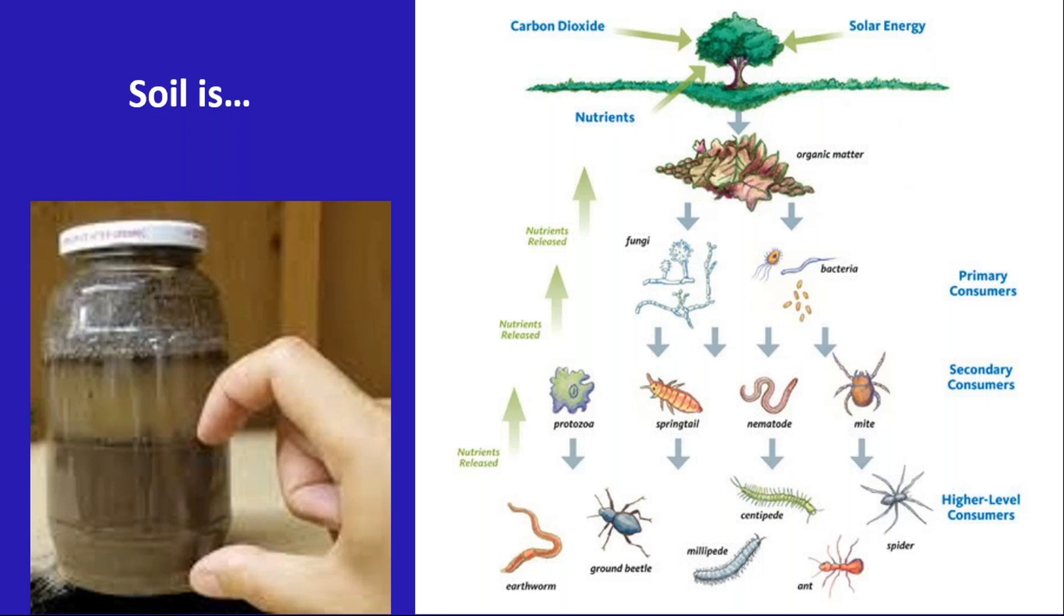Worm composting is something you can do in an apartment if you want to. Compost is the kind of amendment that has both the nutrients, but it also has some of this soil life, some of the soil critters I call them, and I'll come back to that in a sec.